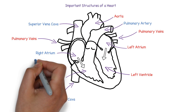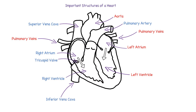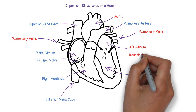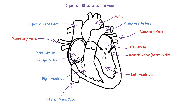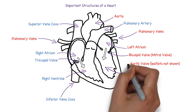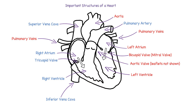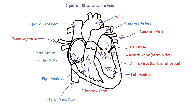The valve between the right atrium and the right ventricle is called the tricuspid valve, and it has three leaflets. The valve between the left atrium and the left ventricle is called the bicuspid valve or mitral valve, and it has two leaflets. The aortic valve is between the aorta and the left ventricle, and the pulmonary valve is between the pulmonary artery and the right ventricle.